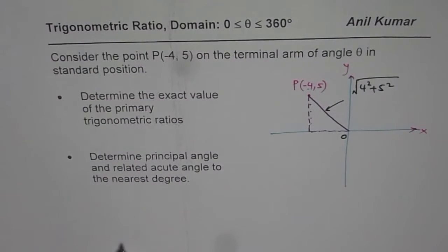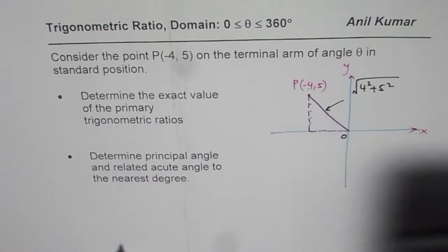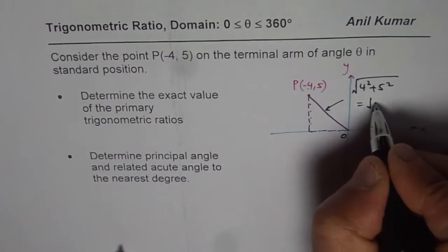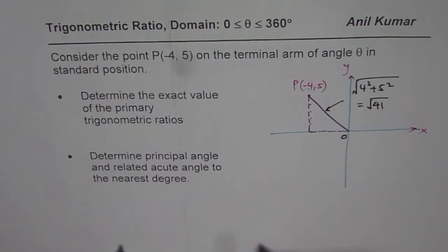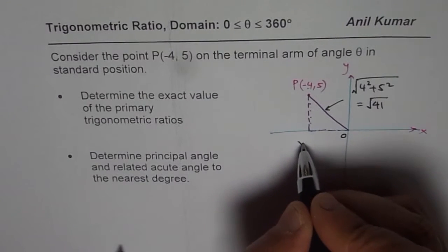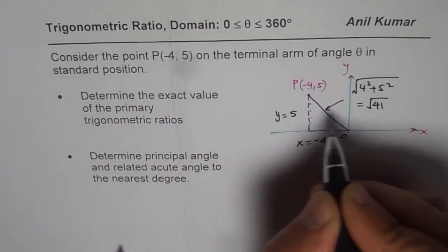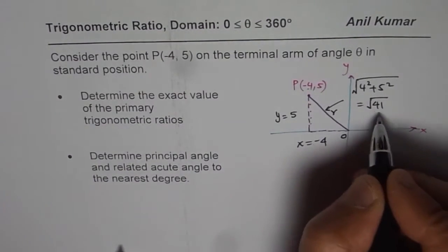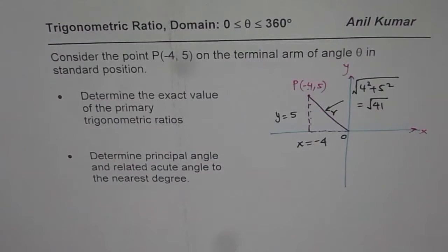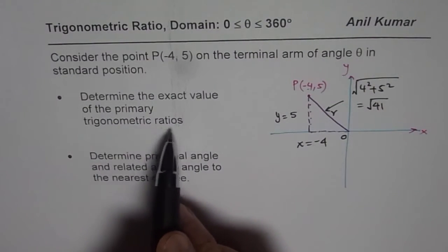We can use calculator and find this value. Square root of 4 square plus 5 square equals to square root of 41. In this particular triangle, we have x value which is equal to minus 4, y value is 5, and this r is equal to square root of 41. With these values, we can find exact value for all primary trigonometric ratios.